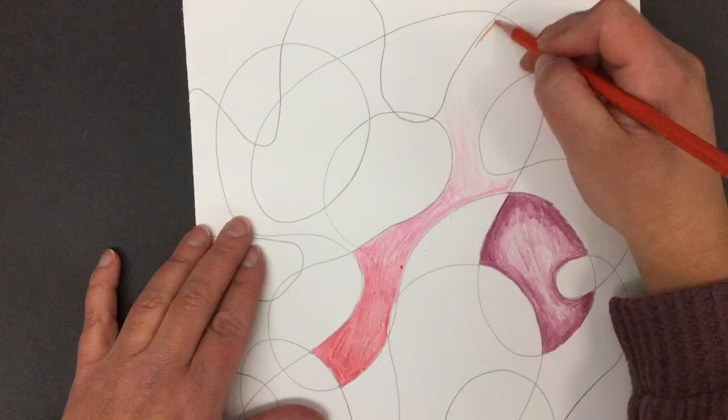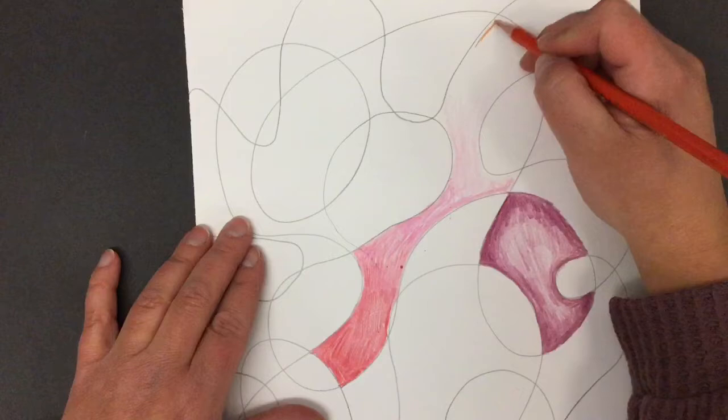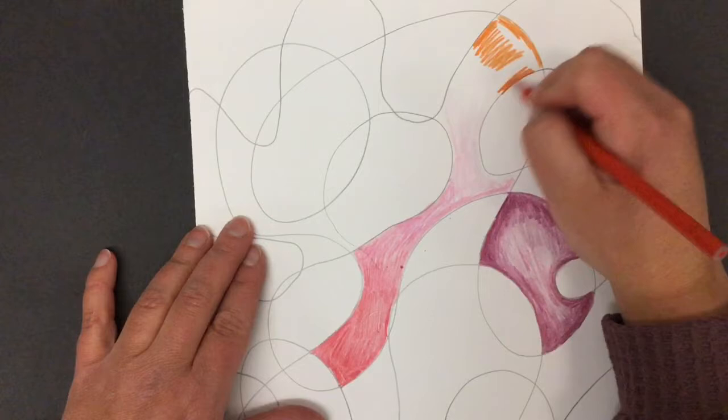Okay, so I'm going to move on from the pink to the orange. Now I started on the other end of the shape here because that part's really dark. And so I'm going to go really dark orange, pressing harder.